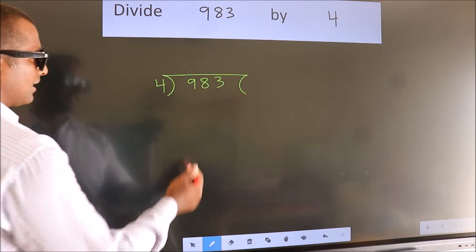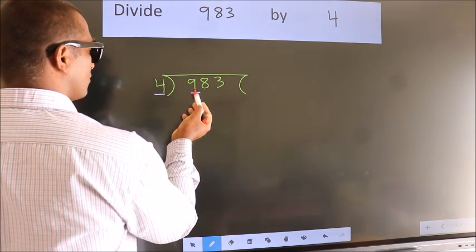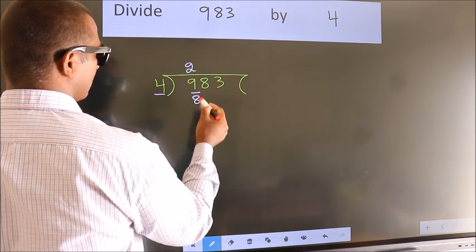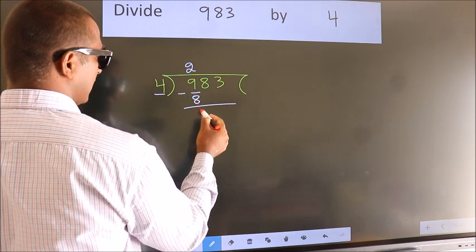Next, here we have 9, here 4. A number close to 9 in the 4 table is 4 times 2, which is 8. Now we subtract and get 1.